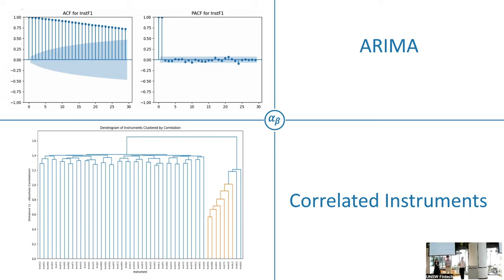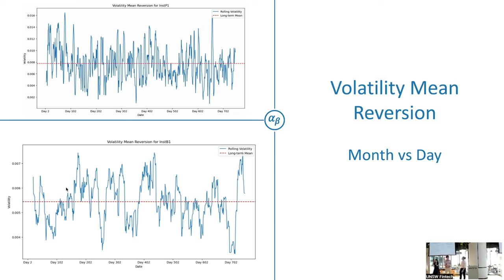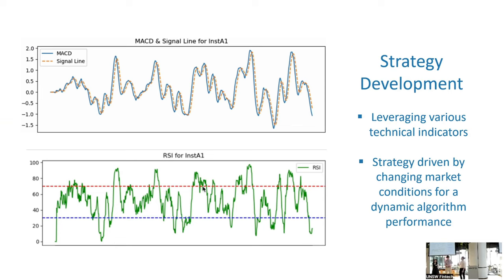Looking at the correlation between the instruments themselves, there was some correlation demonstrated, but we couldn't actually fit anything to that correlation that we liked, so it was a bit of a hit and miss. We then scrapped both those ideas. The next idea was to look at the volatility between the days and try to mean-revert that. We had both monthly and daily data, but that was another tool we ended up scrapping as we moved into the strategy itself.